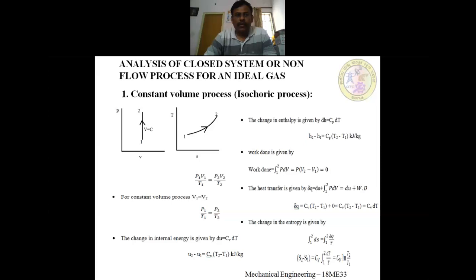First, we will talk about the constant volume process, also known as the isochoric process. This is for a closed system, also known as a non-flow process. In a PV diagram, the line is a vertical line because volume is constant.